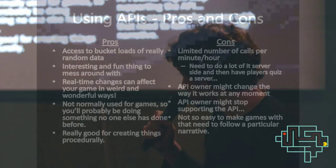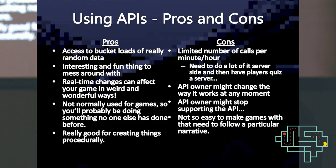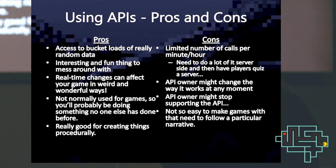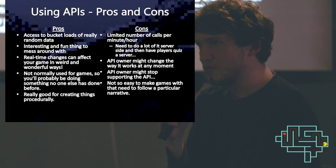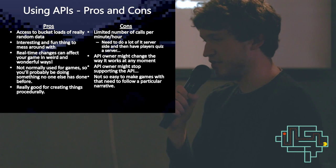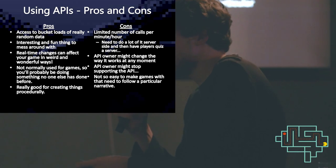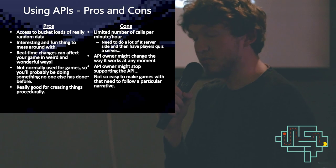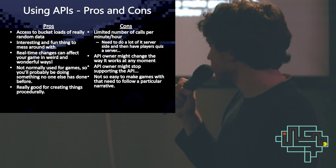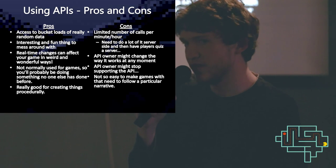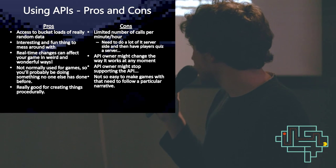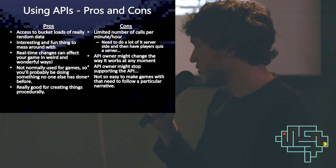Pros and cons of using APIs. Pros: you get access to a huge load of really random data and it's really fun to work with. Real-time changes will affect the game in ways you'll never be able to expect — with the weather games, we don't know if it's going to snow or rain, we don't know if the game will be fun if it's snowing constantly for two months. It's not normally used for games, so you're probably doing something no one's ever done before — it's very gimmicky but very fun, and really good for procedurally generated things.